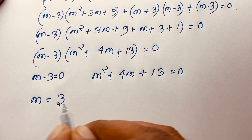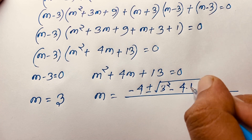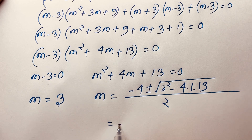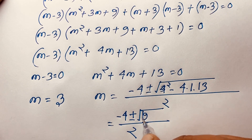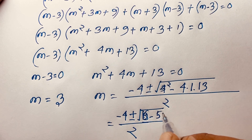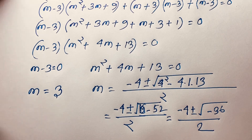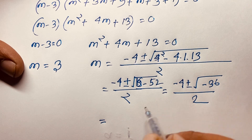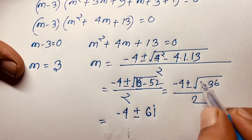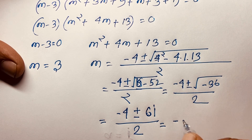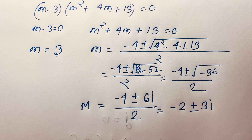From the first case, m equals 3. For the second case, using the quadratic formula with a=1, b=4, c=13: m equals negative 4 plus or minus the square root of (16 minus 52), all over 2. That gives negative 4 plus or minus the square root of negative 36, over 2. Since square root of 36 is 6 and square root of negative 1 is i, we get negative 4 plus or minus 6i, over 2, which simplifies to m equals negative 2 plus or minus 3i.